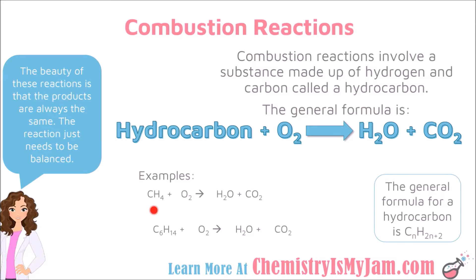In this first example, there is one carbon on the left and one on the right — that is balanced. There are 4 hydrogens on the left and only 2 on the right, so we will need to put a 2 here. In terms of the oxygens, there are 2 on the left. On the right hand side, there are 2 here plus 2 here for a total of 4, so I am going to need to put a 2 here to complete the balancing. That one was fairly straightforward.